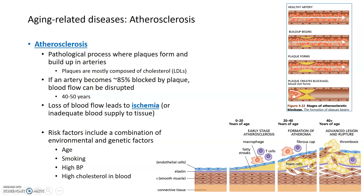Not only do these plaques accumulate in one place, they can actually break off and travel through a blood vessel and attach somewhere else, creating blockages in different locations. Risk factors that contribute to atherosclerosis include age — with a higher risk the older you are — as well as environmental factors such as smoking, high blood pressure, and high cholesterol in the blood. High cholesterol is an obvious risk factor: if these plaques are mostly composed of cholesterol, having high circulating cholesterol makes it easier for those molecules to attach to plaques and continue creating blockages.